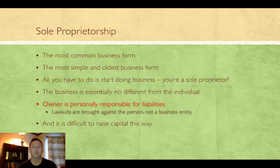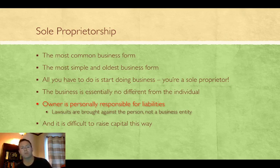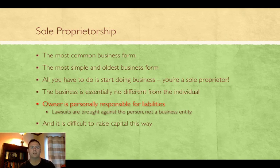The first type of business you can form is a sole proprietorship. This is the easiest, simplest one to form because it's just one person — that's why it's called a sole proprietorship. There's just one proprietor, and all you have to do is start doing business by yourself. You don't have to file any paperwork with your state. You just go out there and start selling hot dogs on a street corner, open up a t-shirt store — just start doing business by yourself.